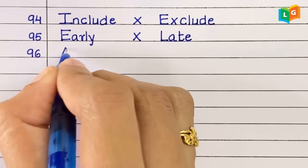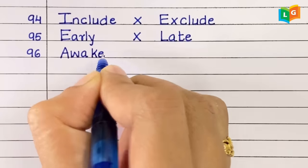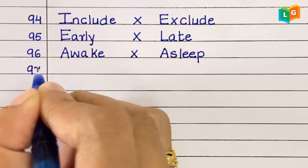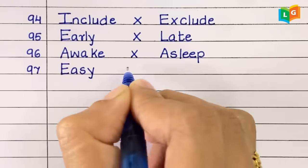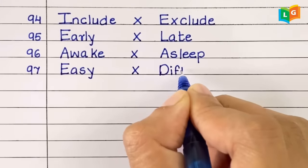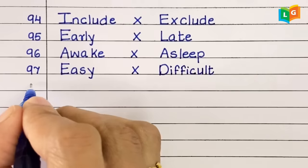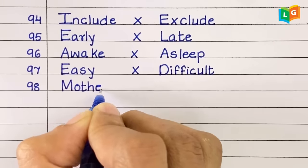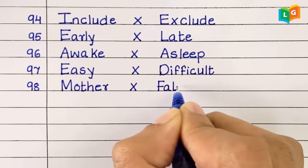Ninety-six, awake, asleep. Ninety-seven, easy, difficult. Ninety-eight, mother, father.